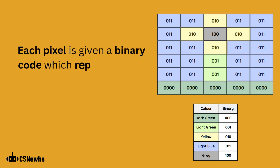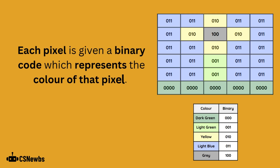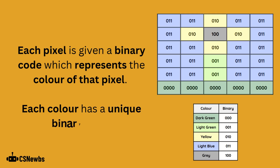Each pixel is given a binary code which represents the color of that pixel. Each color has a unique binary code.